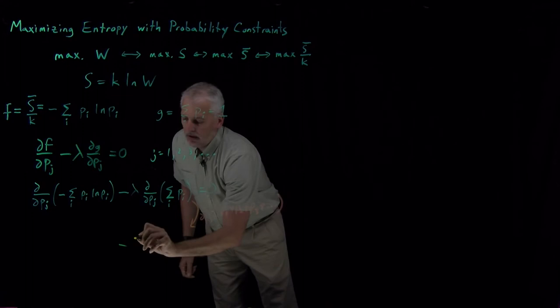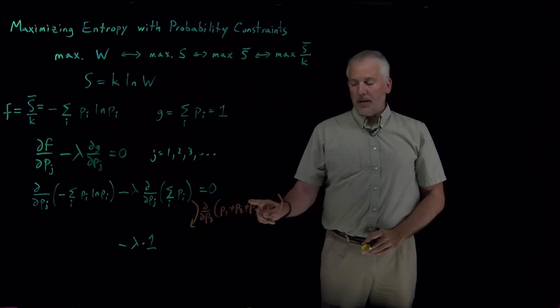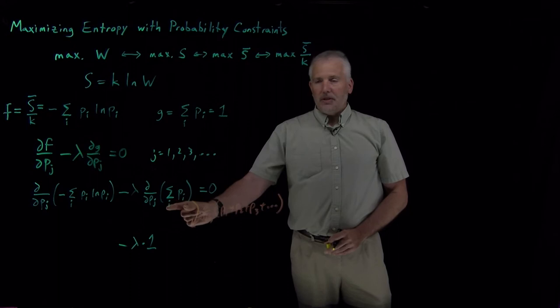That derivative of the sum with respect to P sub j is just one. Whichever the Pj is, it appears in that sum exactly one time with no coefficients. When you take the derivative of summation notation, you're just plucking out only the terms that have a Pj in them and taking the derivative only of those terms.